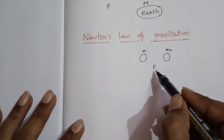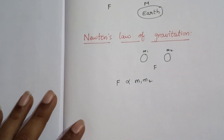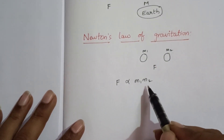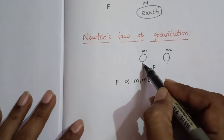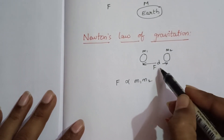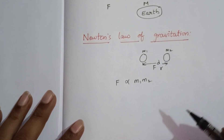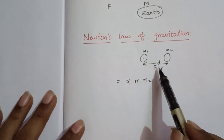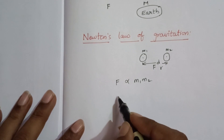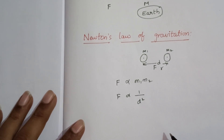This gravitational force is directly proportional to the product of their masses. If the two objects are separated by a distance D — measured from their centers — then the force is inversely proportional to the square of the distance between them.